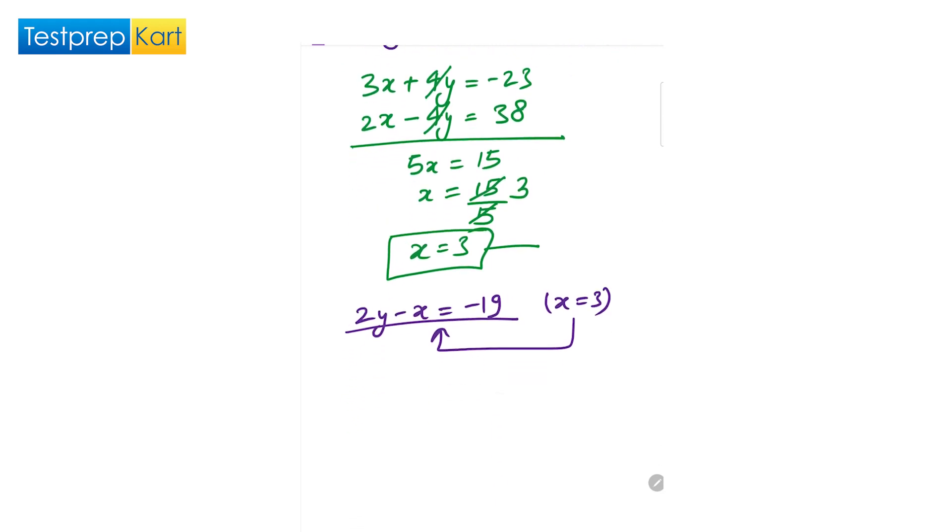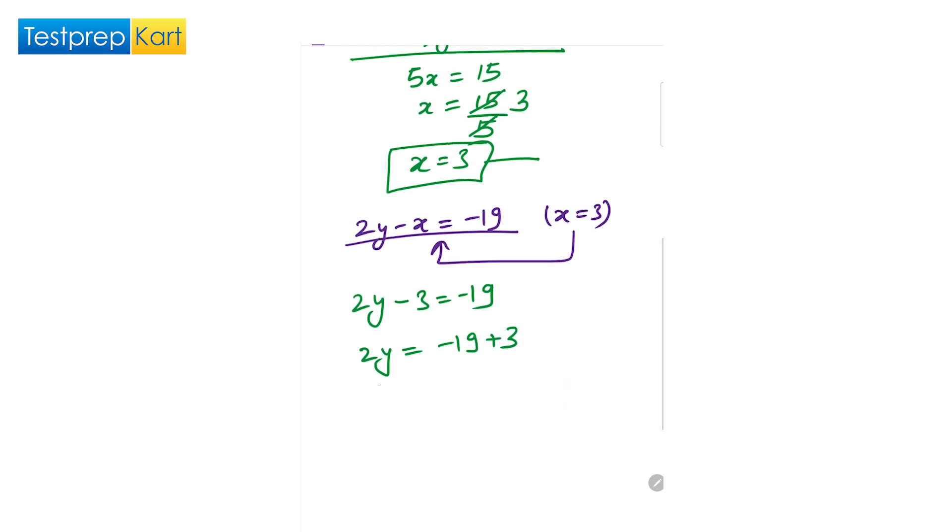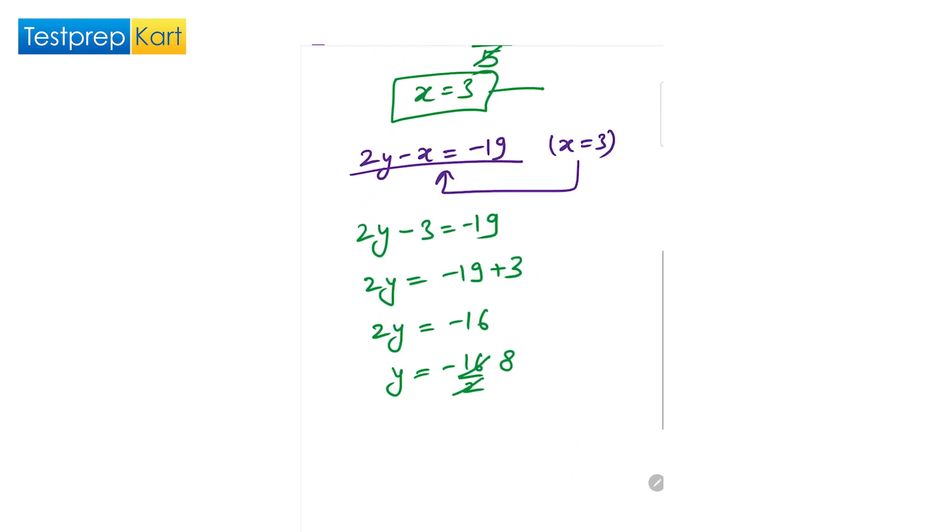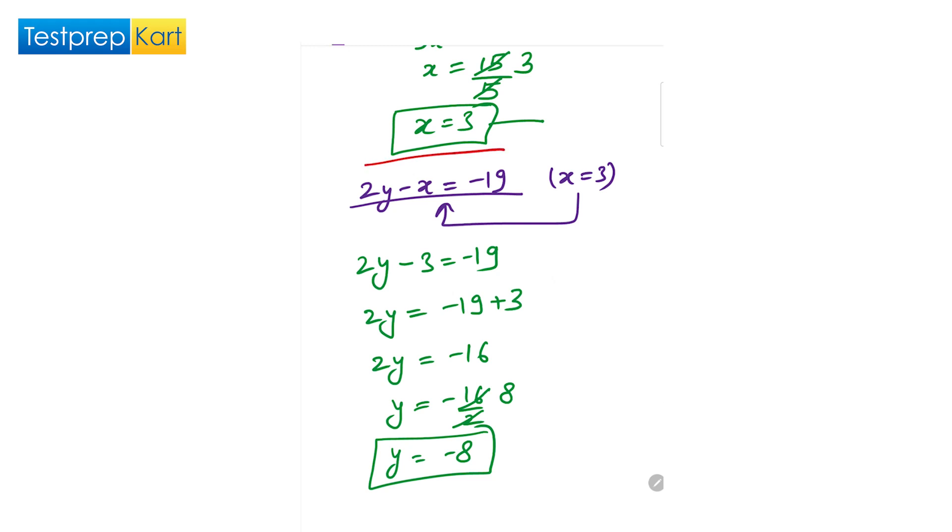After putting the value of x here, we will have 2y minus 3 equals minus 19. So 2y equals minus 19 plus 3. We have 2y equals minus 16. So y equals minus 16 by 2, which is minus 8. We have the value of x which is 3, and the value of y equals minus 8.